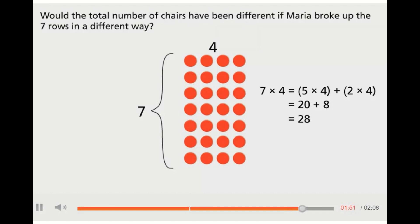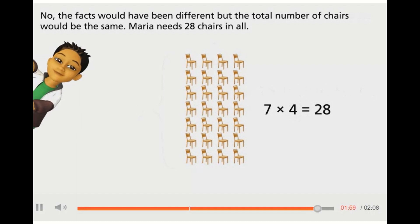Would the total number of chairs have been different if Maria broke up the seven rows in a different way? No, the facts would have been different, but the total number of chairs would be the same. Maria needs twenty-eight chairs in all.